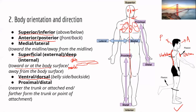Ventral and dorsal: ventral refers to the belly side, and dorsal refers to the back side. You can think of these as basically the same as anterior and posterior. The ventral side is also anterior, and the dorsal side is also the back, which is posterior.